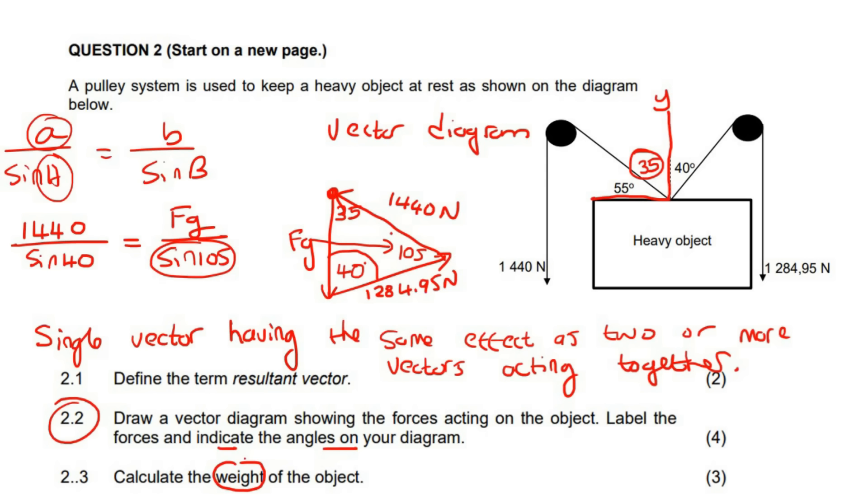So you would take this sin 105 over to there, and then you would take this part over to there. You don't have to do that last part that I just showed you. It depends on your level of understanding or how you are comfortable with doing this. But a lot of learners like to use cross multiplication. So you could go multiplied by sin 105 equals to sin 40 multiplied by FG. Now to get FG alone, you would divide by sin 40. So you would end up with FG is equal to 1440 multiplied by sin 105 over sin 40. And so if you had to work out FG, you would end up with 2163.91 newtons.